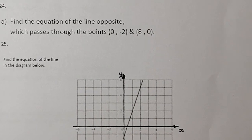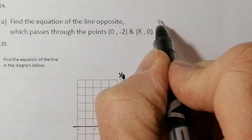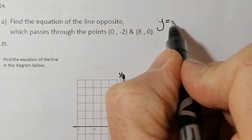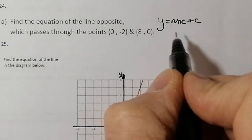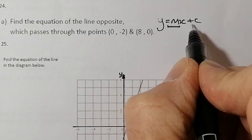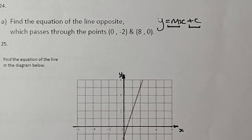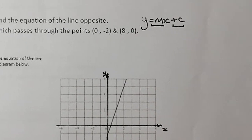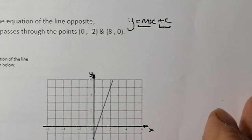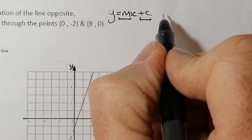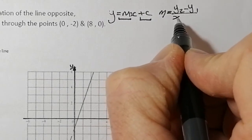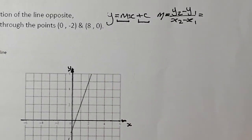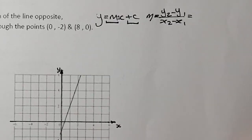To find the equation of the line, I want it to look like y = mx + c. I've got to find the gradient and I've also got to find the y-intercept value — that's the c value. To get the gradient, I'll use the gradient formula with these two points. The gradient is equal to y2 minus y1 all over x2 minus x1. That's not given in your exam as a formula, but you need to remember that one.